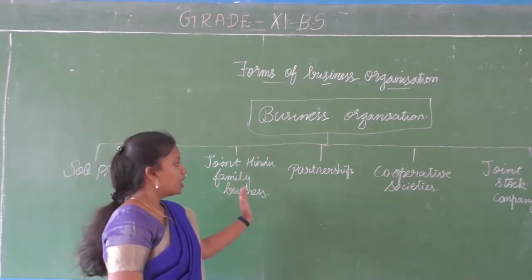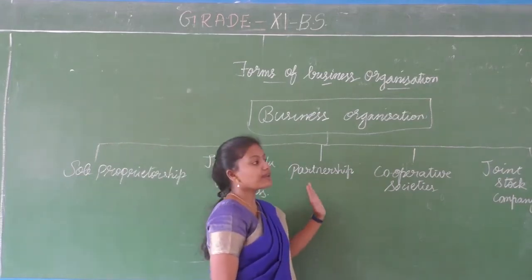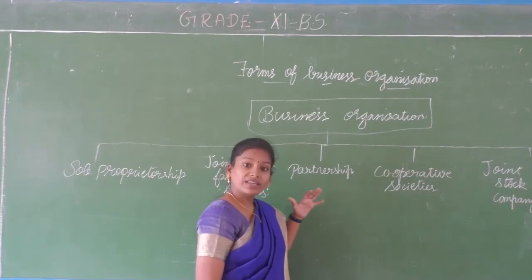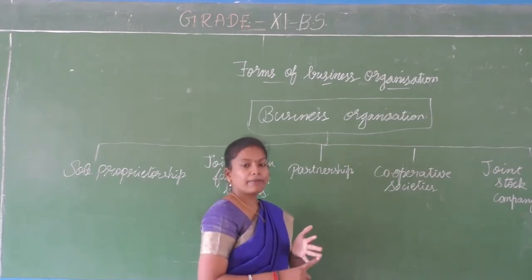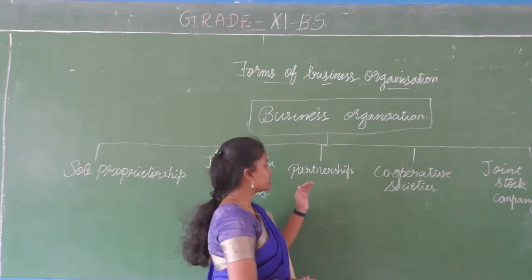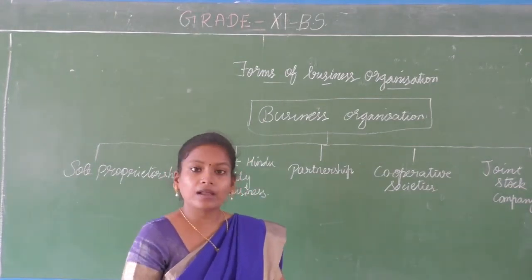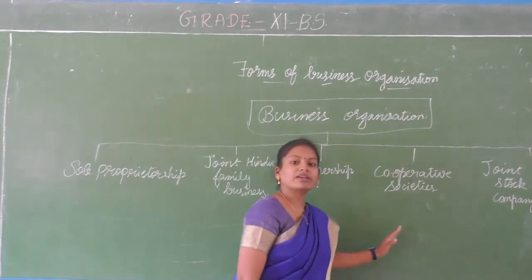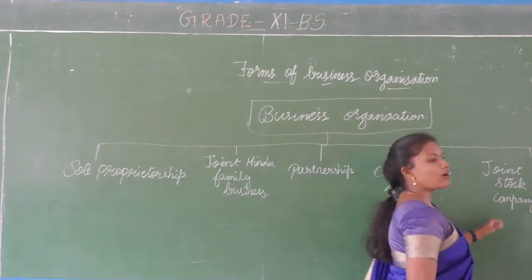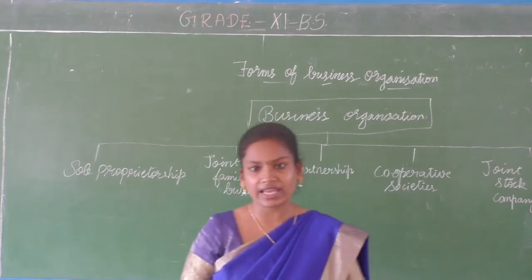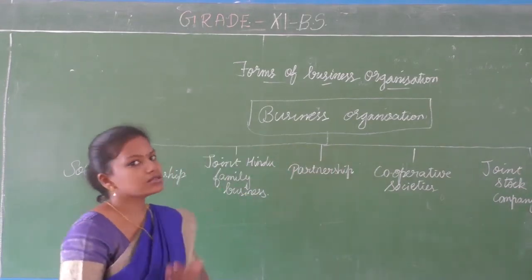Joint Hindu Family Business is otherwise called Joint Undivided Family Business. Then we have partnership - and there are various classifications within partnership: various kinds of partners like active partner, sleeping partner, dormant partner, nominal partner, and various kinds of partnership such as partnership by capital and partnership by liability. Then co-operative societies where people invest and get a share. And finally joint stock company, where we buy shares of a company and join that particular organization.